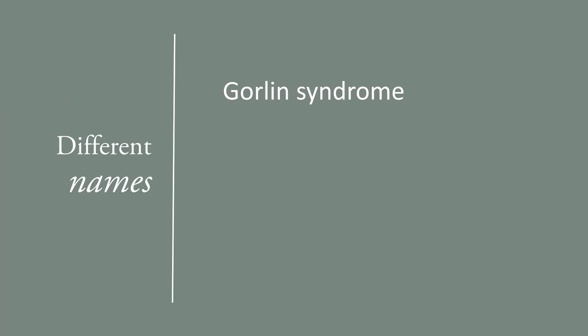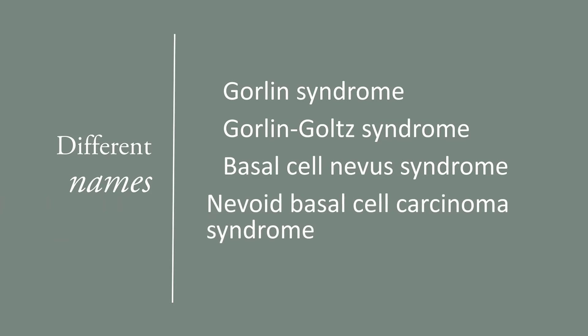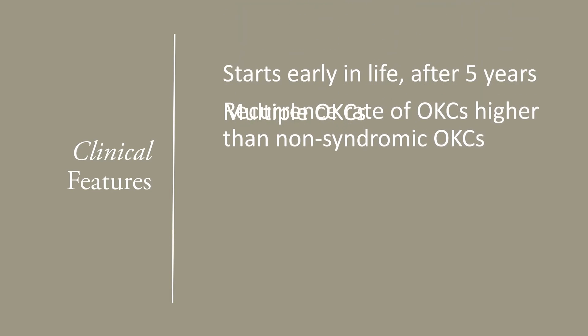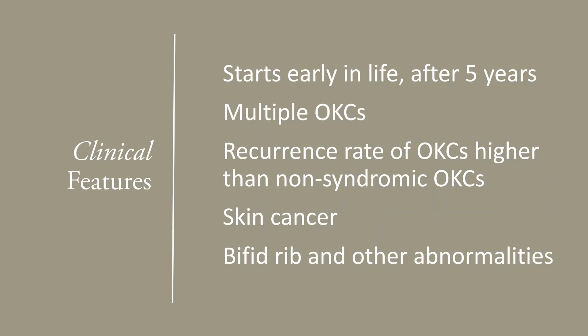Gorlin syndrome has several names. Other than Gorlin syndrome, it's also known as Gorlin-Goltz syndrome, and also as basal cell nevus syndrome, or nevoid basal cell carcinoma syndrome. Gorlin syndrome can start early in life, after five years of age. The patient will have multiple odontogenic keratocysts, which have a higher recurrence rate than solitary odontogenic keratocysts without Gorlin syndrome. The patient will also have basal cell cancer, and there may be several other bony findings — the most common is the bifid rib.